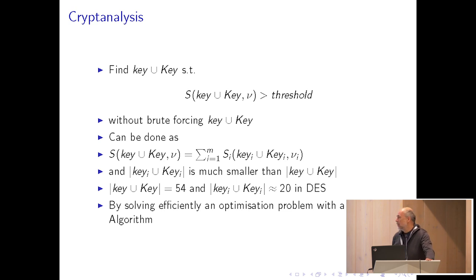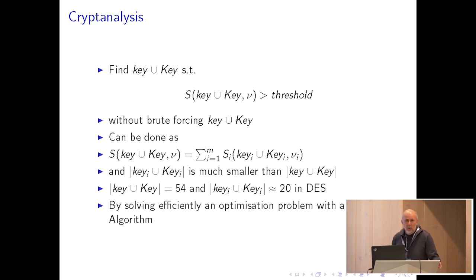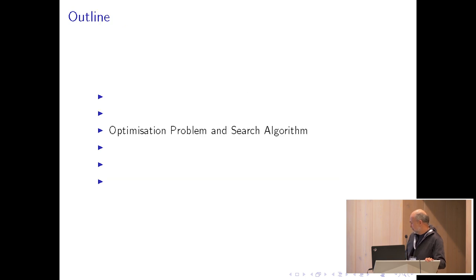In cryptanalysis we need to solve this inequality: find the values of the key such that the inequality is satisfied, and accept those as the correct key — without brute-forcing all key bits. This can be done because our statistic is the sum of functions each depending on a low number of variables. In experiments with DES, the size of the full key bit set is 54 bits, and the size of each projection's relevant set is around 20 bits. This can be represented as an optimization problem, and the method to solve it is a tree search.